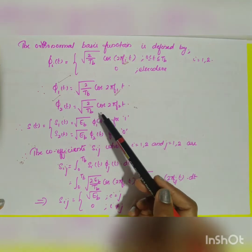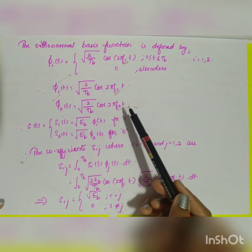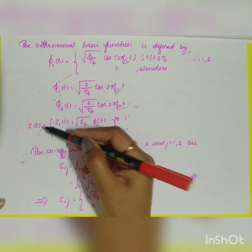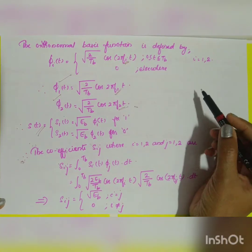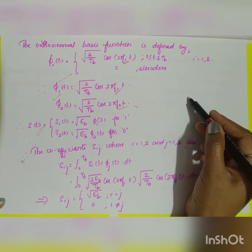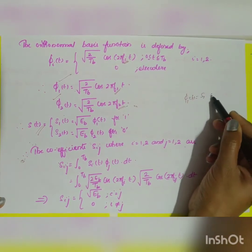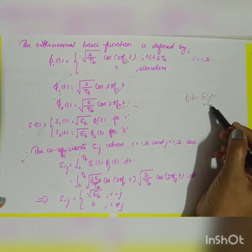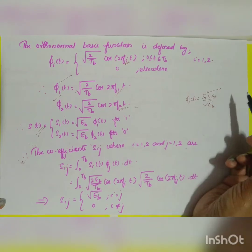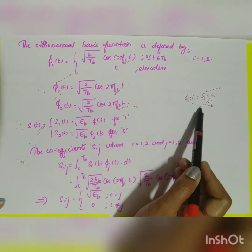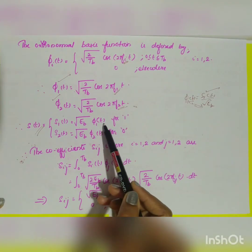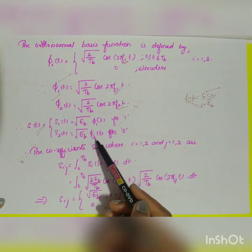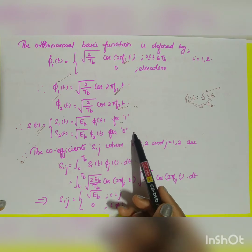We can rewrite s(t) in terms of the orthonormal basis functions. Since φ_1(t) = s_1(t) / √E_b, it follows that s_1(t) = √E_b · φ_1(t) for symbol 1, and s_2(t) = √E_b · φ_2(t) for symbol 0.